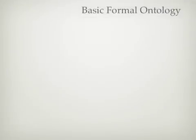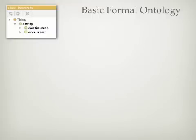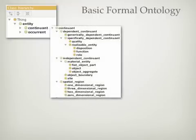The Basic Formal Ontology starts by distinguishing between Continuant Entities and Occurrences, or Events. Continuants include such things as material entities, sites, spatial regions, object aggregates, qualities, dispositions, functions, and roles.